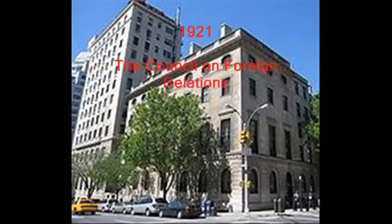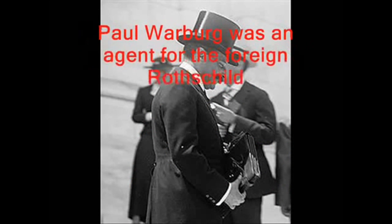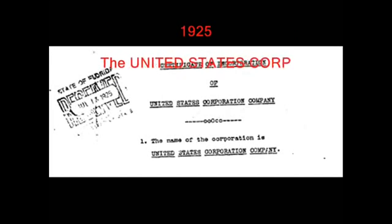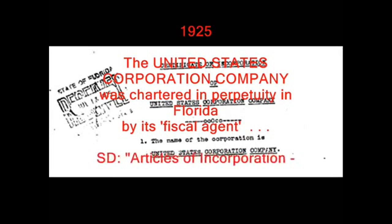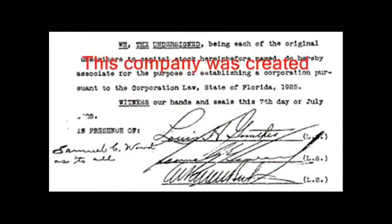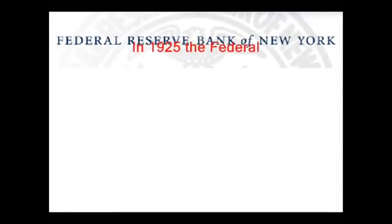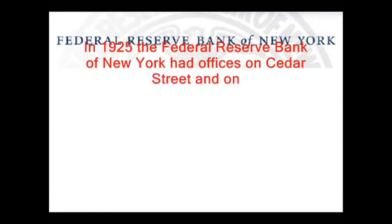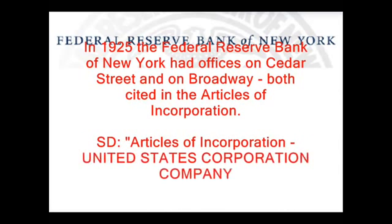1921: The Council on Foreign Relations was founded to direct the media. Paul Warburg was its first director. Warburg also drafted the Federal Reserve Act and became the Fed's first governor. Paul Warburg was an agent for the Rothschilds banking dynasty. 1925: The United States Corporation Company was chartered in perpetuity in Florida by its fiscal agent. Source: Articles of Incorporation, United States Corporation Company. This company was created without the approval of Congress nor the knowledge and authority of the American people.